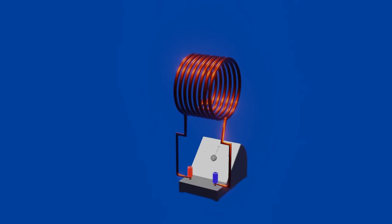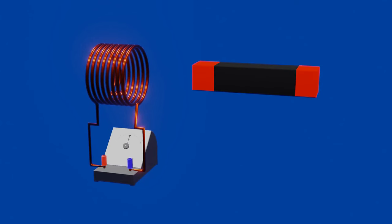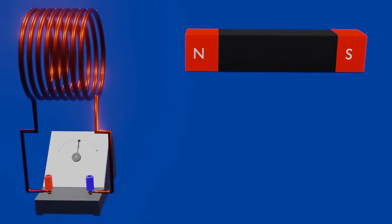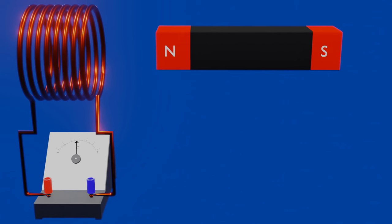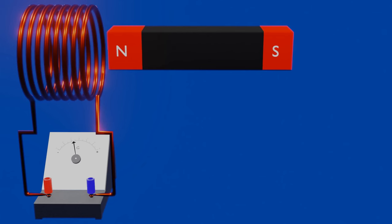For explaining Faraday's law of electromagnetic induction, let us take a simple coil with which a galvanometer is connected in series, and a permanent bar magnet on which N and S represent the north and south pole respectively. In this experiment, when we move the bar magnet towards the coil, an indication of electric current can be seen clearly through the deflection of the needle in the galvanometer. But when we stop moving the bar magnet, the galvanometer does not show any indication of electric current.